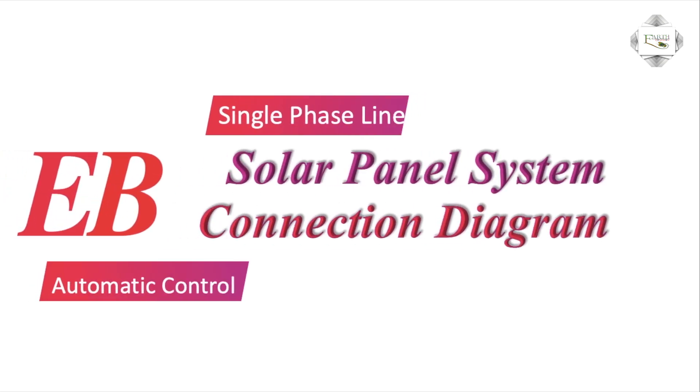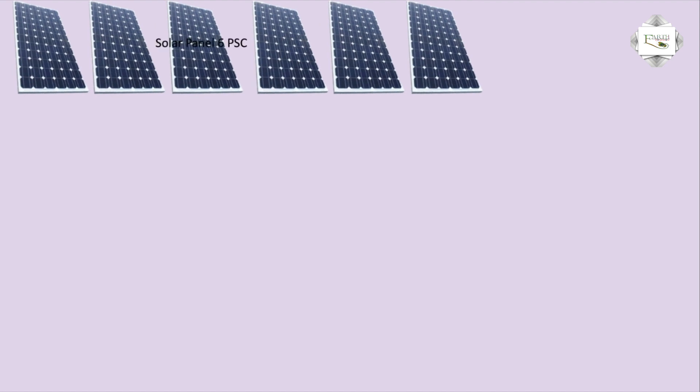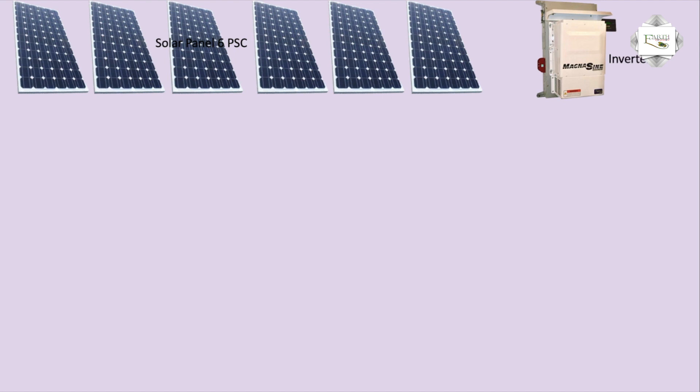Hello viewers, today I discuss the single-phase line solar panel system connection circuit diagram with automatic control using solar panels. The system includes 6 pieces at 18 watts per piece, an inverter or IPS with high-capacity low-voltage to high-voltage conversion, and overload protection.